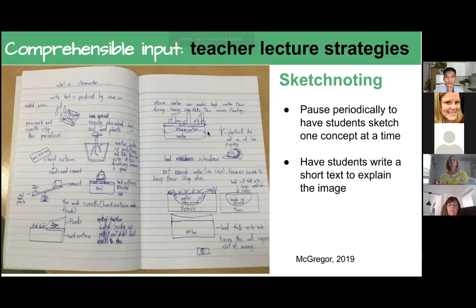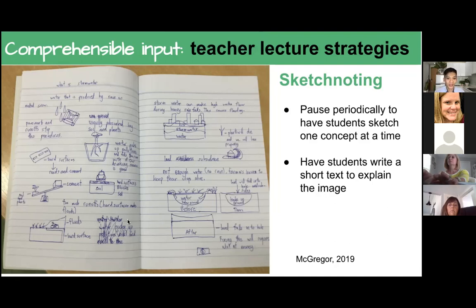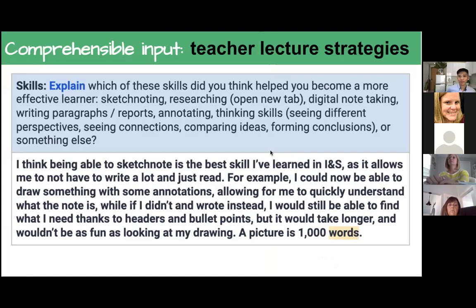You can encourage secondary teachers who are experts at their content to: after teaching a concept, just have students pause and sketch note that concept in their own way. Maybe you can have students explain in short text what the image means. This is an example from my student from last year — we were learning about stormwater.